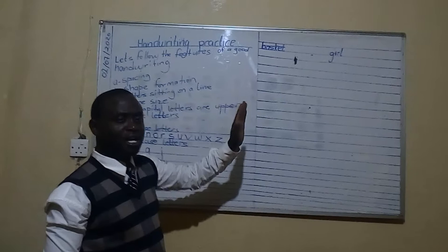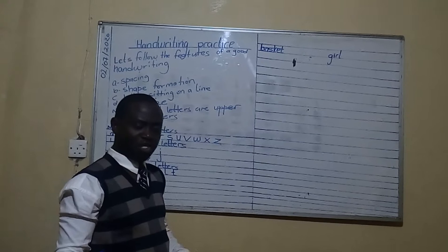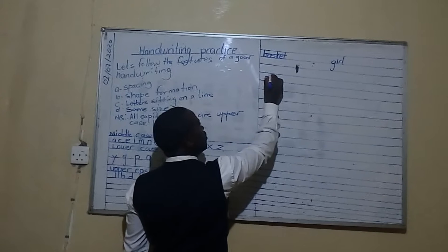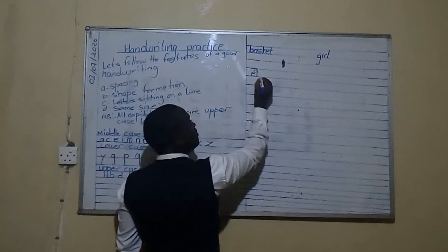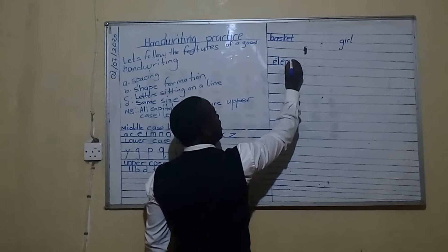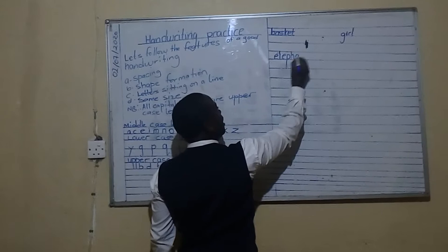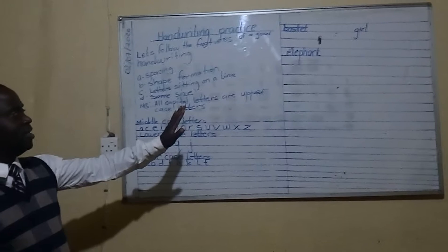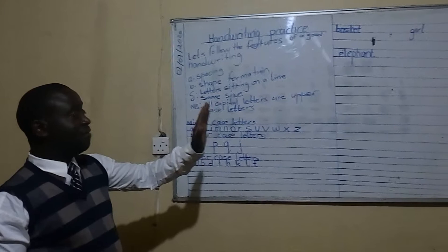I expect whoever is watching to be identifying the category of letters we are writing. Now look at this word — we have E as the middle case letter. We have L, which goes straight upwards — it is an upper case letter. We have E again, but P is a lower case letter. H is an upper case letter. A is the middle case letter, and N is the middle case letter. And T is an upper case letter.